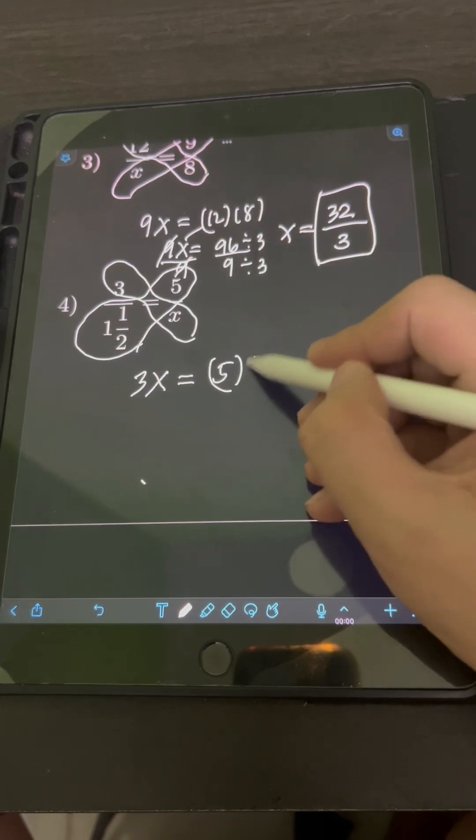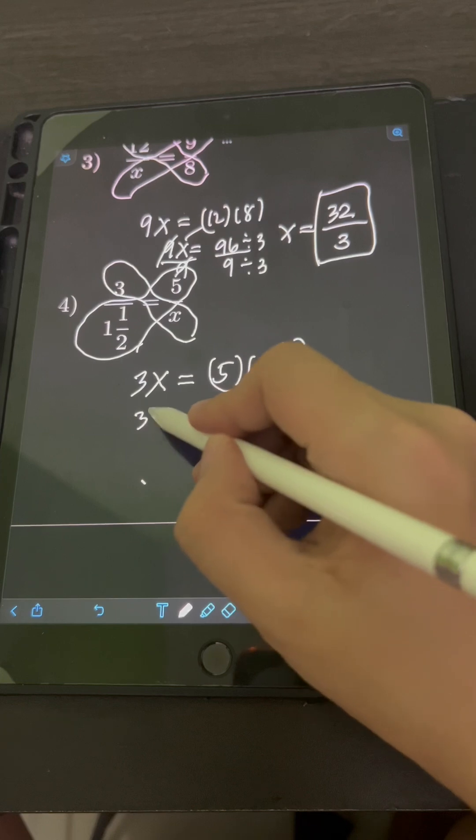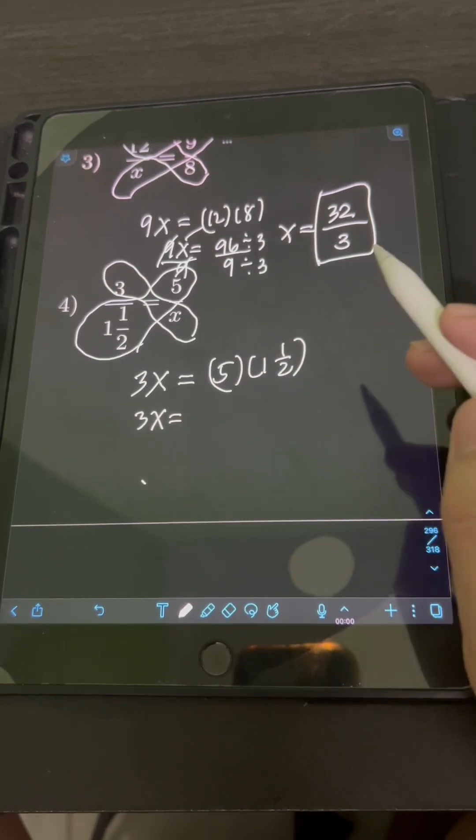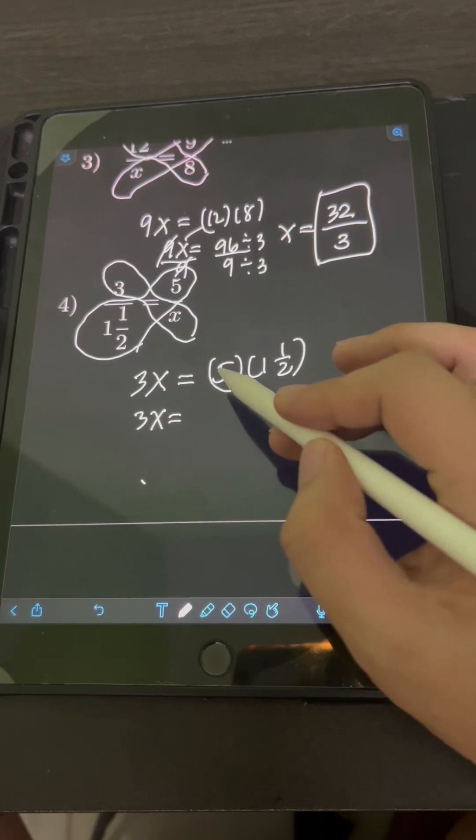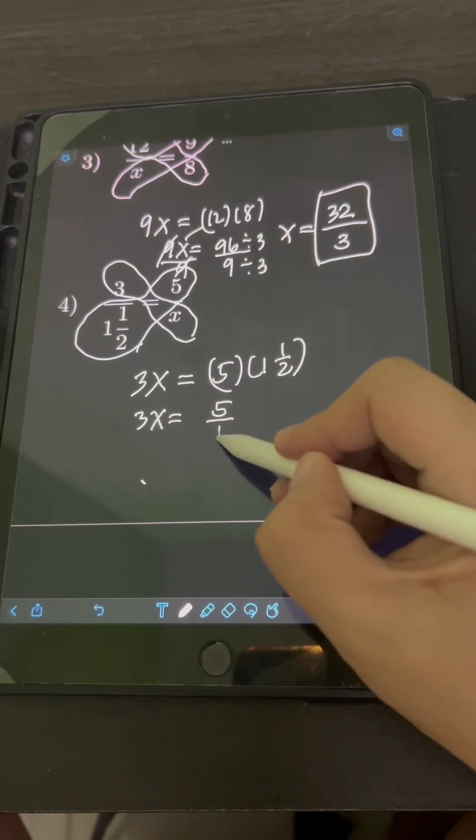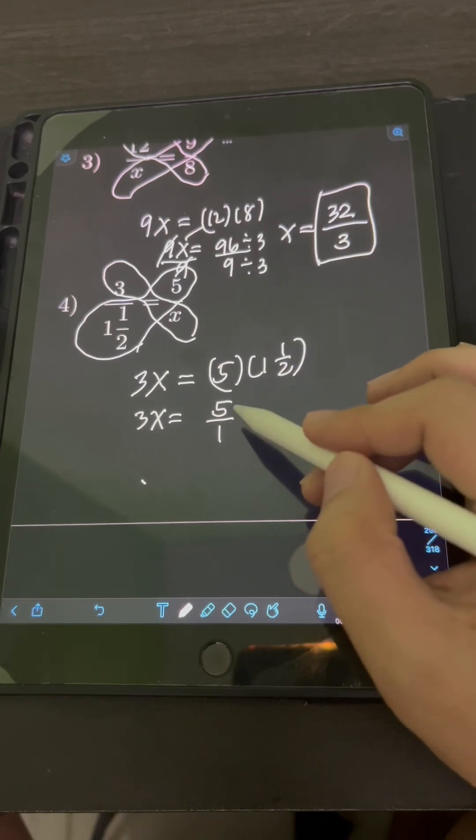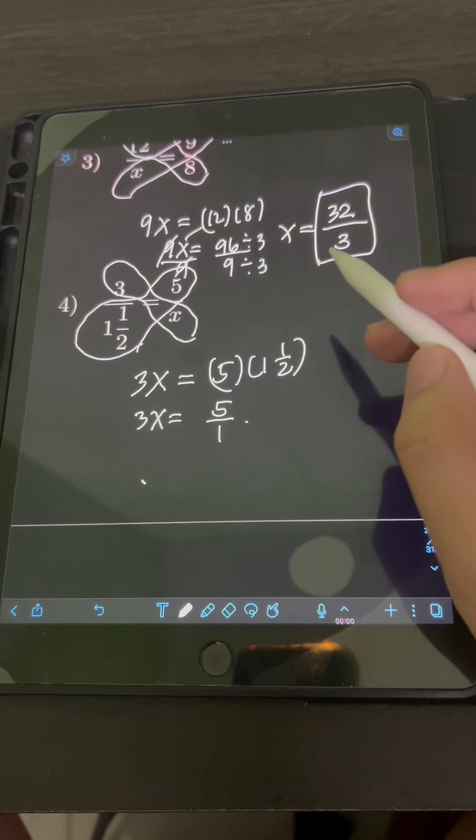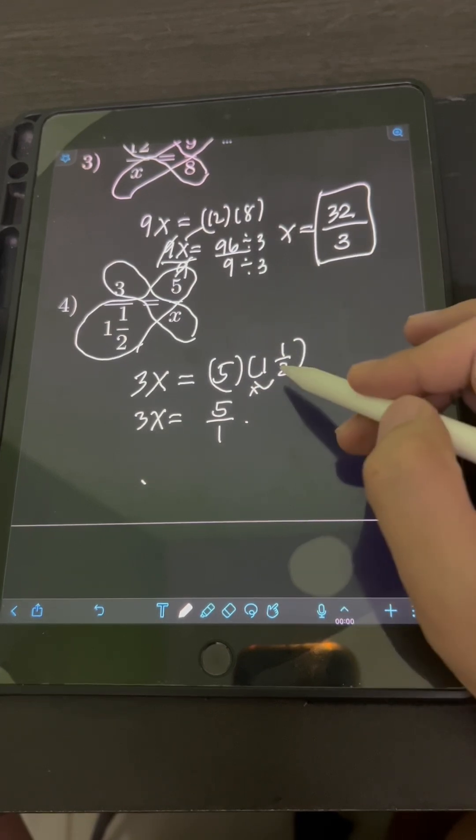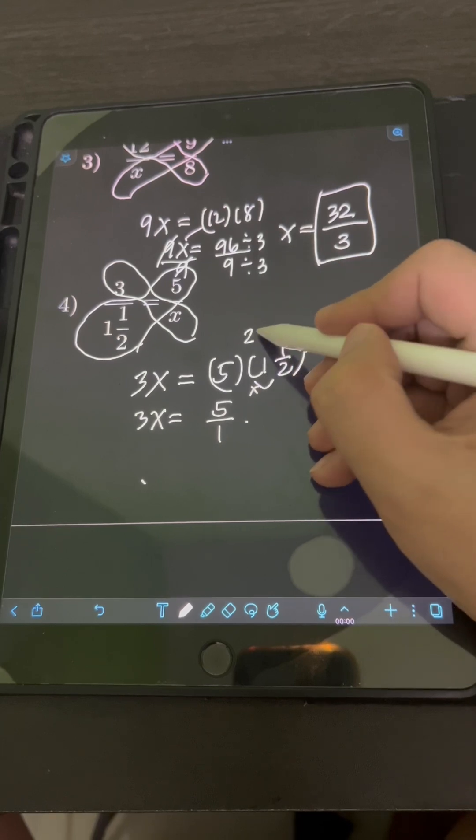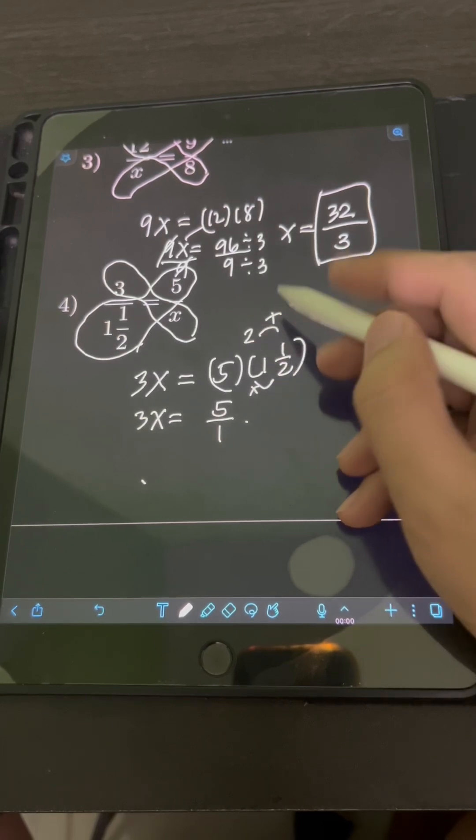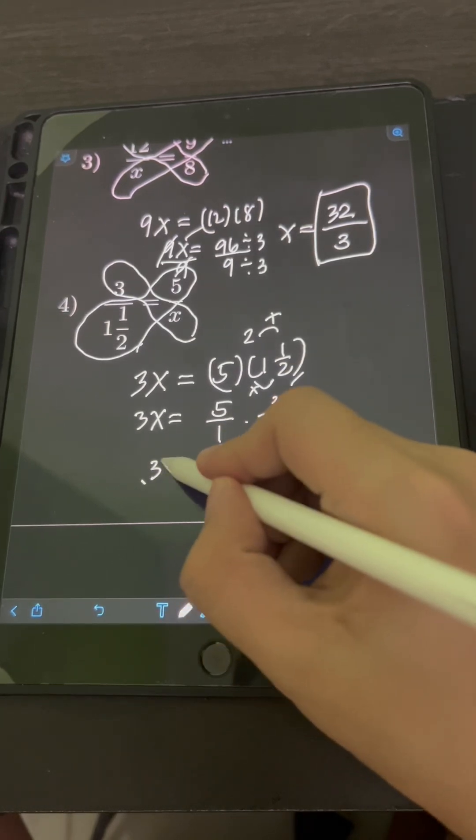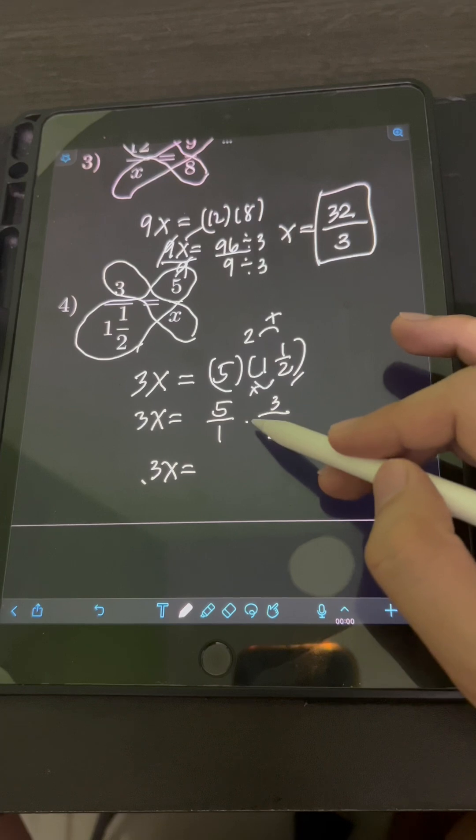So let's multiply 5 times 1 and 1 half. So how do we multiply fractions? So this 5, let's make it as a fraction by having a denominator of 1. So 5 is equal to 5 over 1 times 1 and 1 half. So we have a mixed number. So transform this first into improper fraction. So multiply 2 times 1, that's 2. Then add the product to the numerator 1, 2 plus 1, that's 3, over the same denominator of 2. So we have 3x is equal to 5 over 1 times 3 halves.